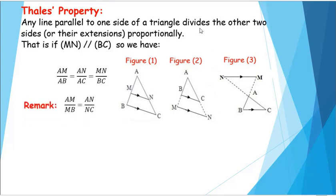The third property can also be written in the form AM over MB equals AN over NC. But in this case, we cannot say that this relation equals MN over BC.